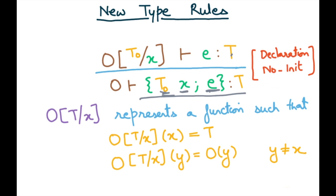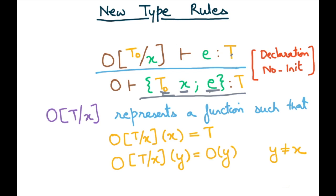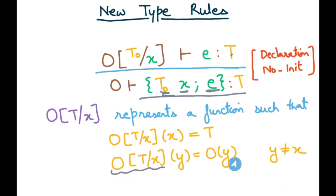The notation O[t/x] — or O updated with t for x — represents a function such that applied to x it gives t. For all other variables y where y is not equal to x, the updated function maps y to whatever the original O mapped y to. If x did not already exist in O a new mapping is created; if x already existed its type is overwritten with t0. With this notation we have written the typing rule for declaration without initialization.